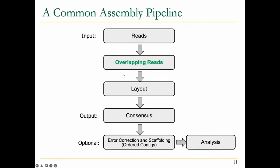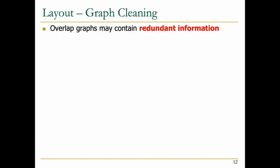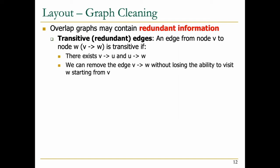The layout step can be considered as the graph cleaning step — we want to make the graph as simple as possible. We do this because overlap graphs may contain redundant information. The first type of redundant information is referred to as transitive or redundant edges. These are edges where there are two different paths, but we can take one and ignore the other without losing any connectivity information. More formally: an edge from V to W is transitive if there exists some path from V to U and U to W, such that we can remove the direct V to W edge without losing the ability to reach W from V.